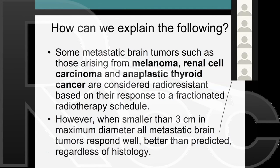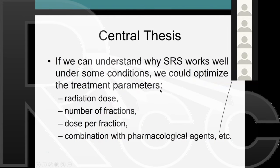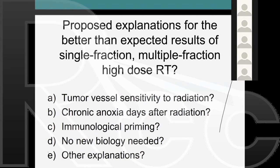Regardless of histology, high dose radiation seems to work. If we could understand the biology, we could optimize parameters—the best dose, number of fractions, and dose per fraction—and exploit the biology by combining with agents to get more cell kill and better cure rates. This is an area of intense research. What I'm showing now is not 100% confirmed; it's intriguing data from animal studies that needs to be confirmed in patients.